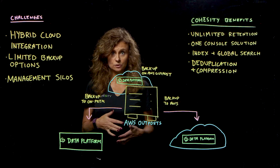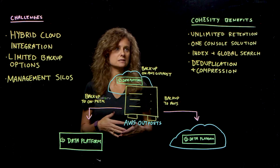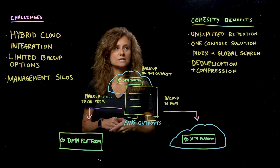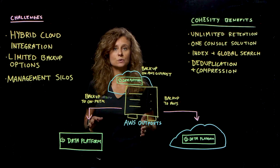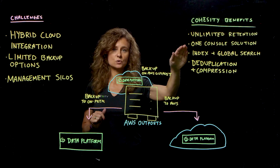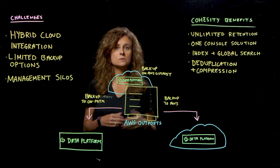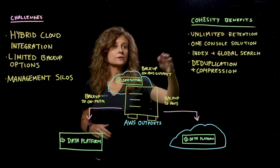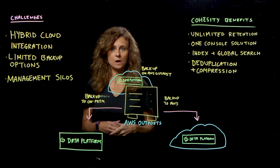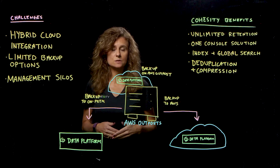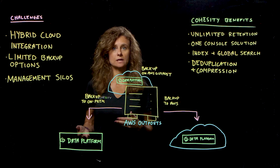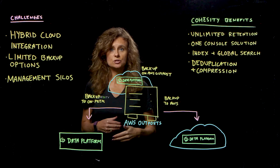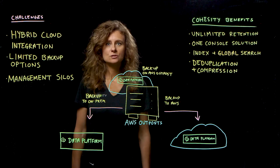Now that we've unraveled those challenges, let's take a look at the Cohesity benefits. With our solution, you get several different features. One, you get unlimited retention — you can keep that data as long as you like. We offer you a one-console solution, so whether your data is in AWS Outposts, on-prem, or AWS cloud, you have one console to do all of your data protection work. We also offer index and search, which is very powerful — no matter where your data is, we can search and get that data back right where it came from. And lastly, our deduplication and compression, also extremely powerful, reducing your storage footprint long term as you need to keep this data around.